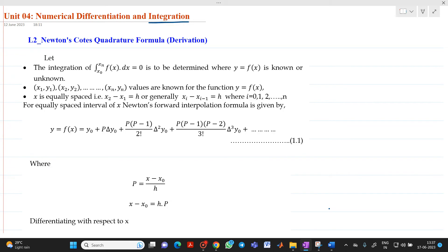The name of the topic is derivation of Newton's-Cotes quadrature formula. Let us consider we have an integral I equal to integration x0 to xn f of x dx, where this f of x is y equal to f of x, a function which will be known or unknown.